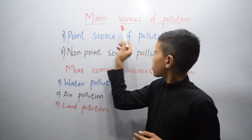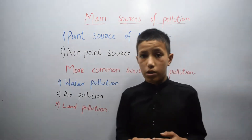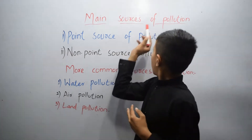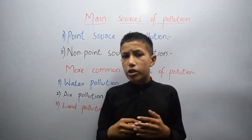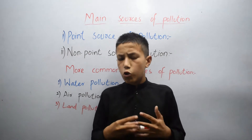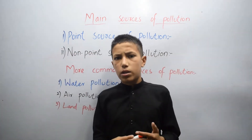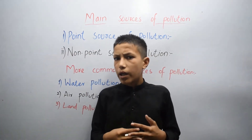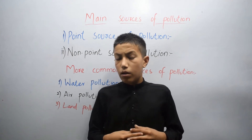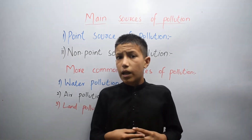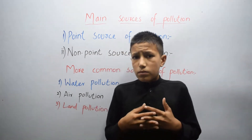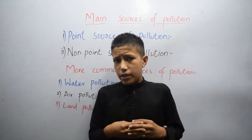Let's talk about main sources of pollution. Pollution is a harmful change in the environment. Things around us such as water, air, and land make our environment. Pollution affects the living and non-living things of the environment — it makes our environment dirty.